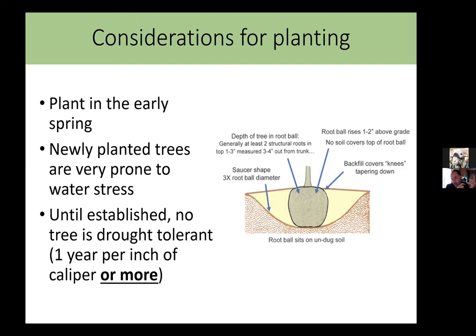You can also do fall planting for deciduous trees if you need to — you can have success with fall or summer planting, it's just more stressful for the tree. One thing I would really avoid is planting evergreens in the fall — they're prone to drought stress in winter because they're still losing water through their needles. Early spring is the very best time to plant.